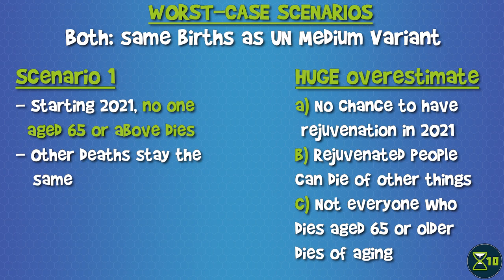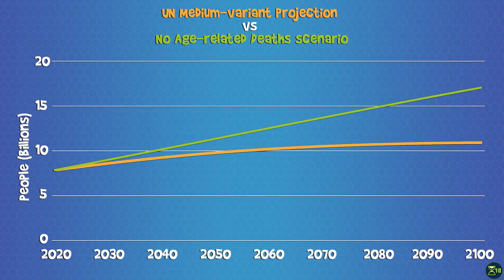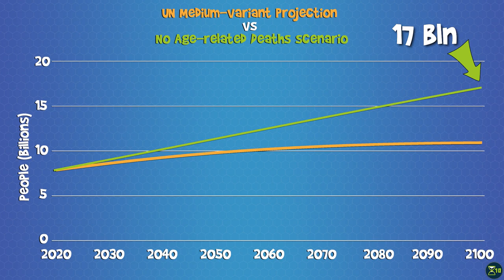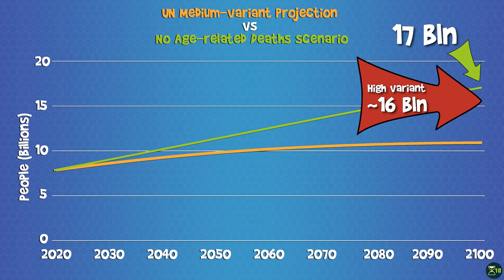The overestimate looks like this. In this scenario, we would hit 11.2 billion in 2050 and 17 billion in 2100, and that's a lot, even more than the UN high-variance scenario, but probably a lot less than you were expecting. And remember that it's a gross overestimate.